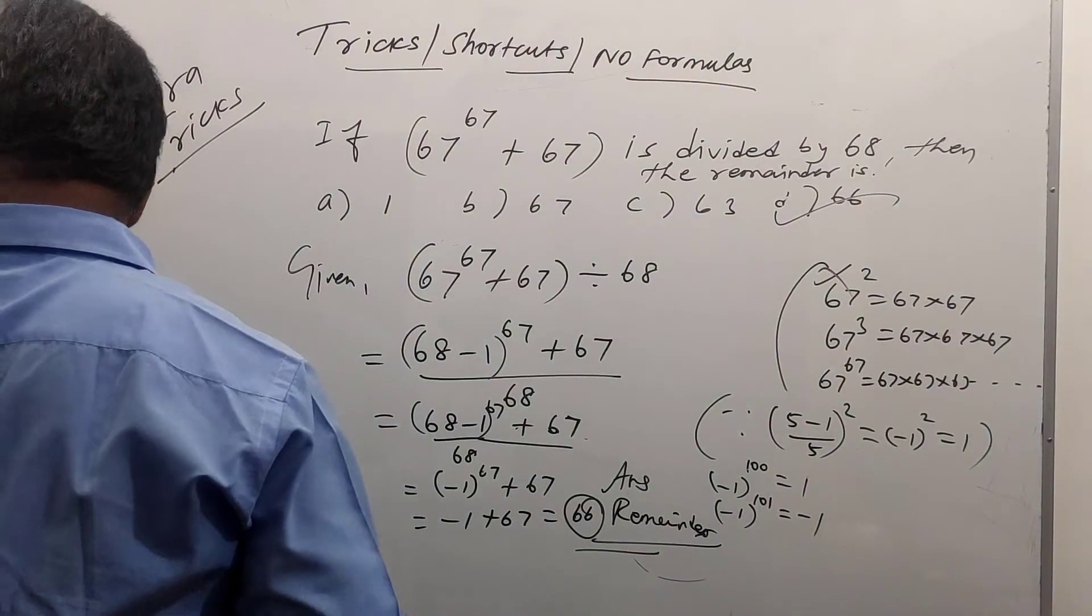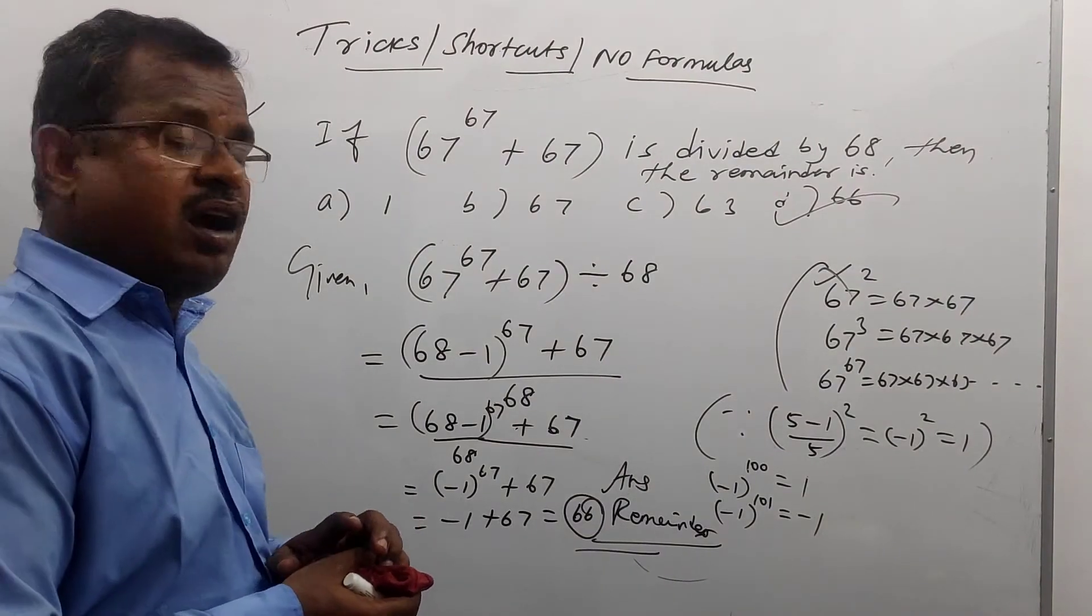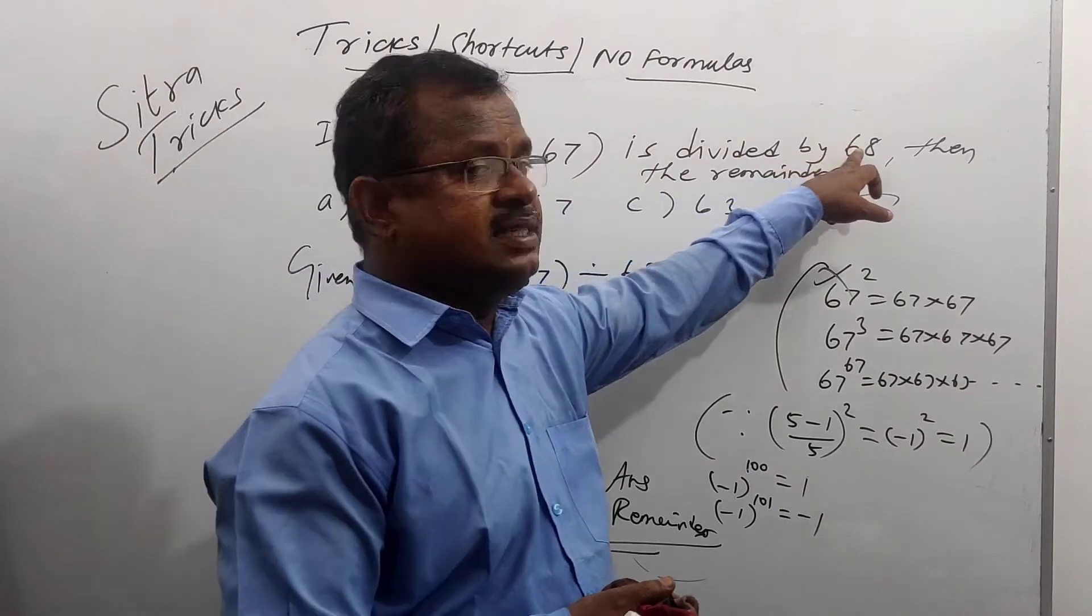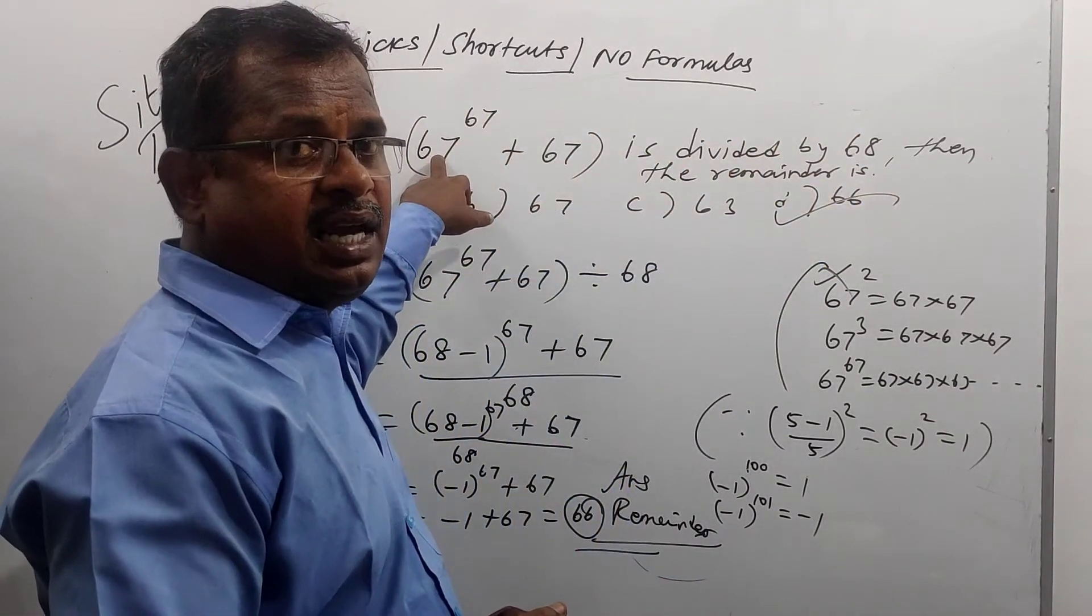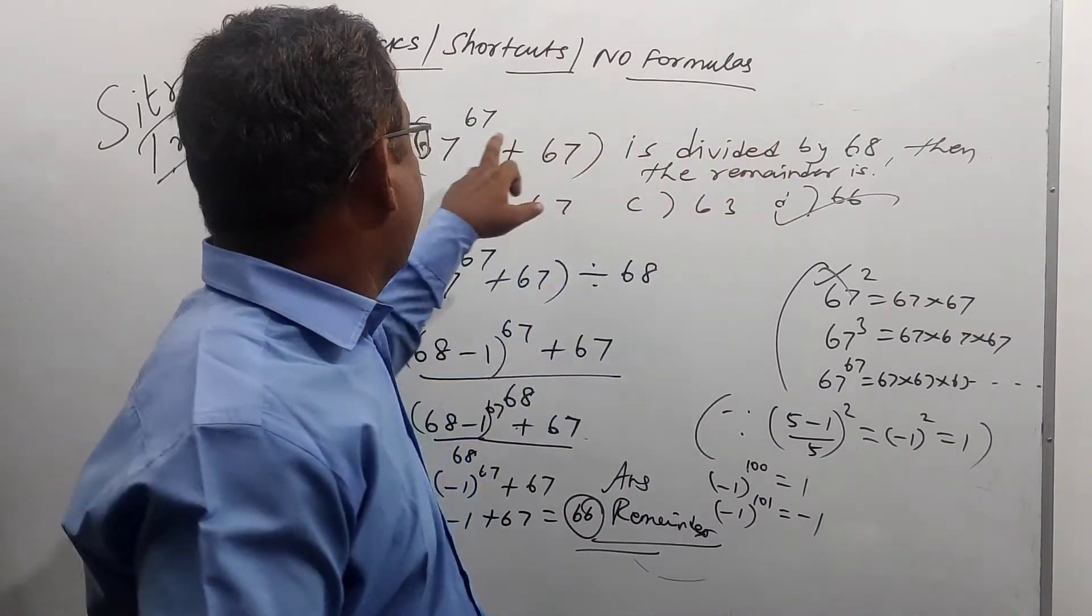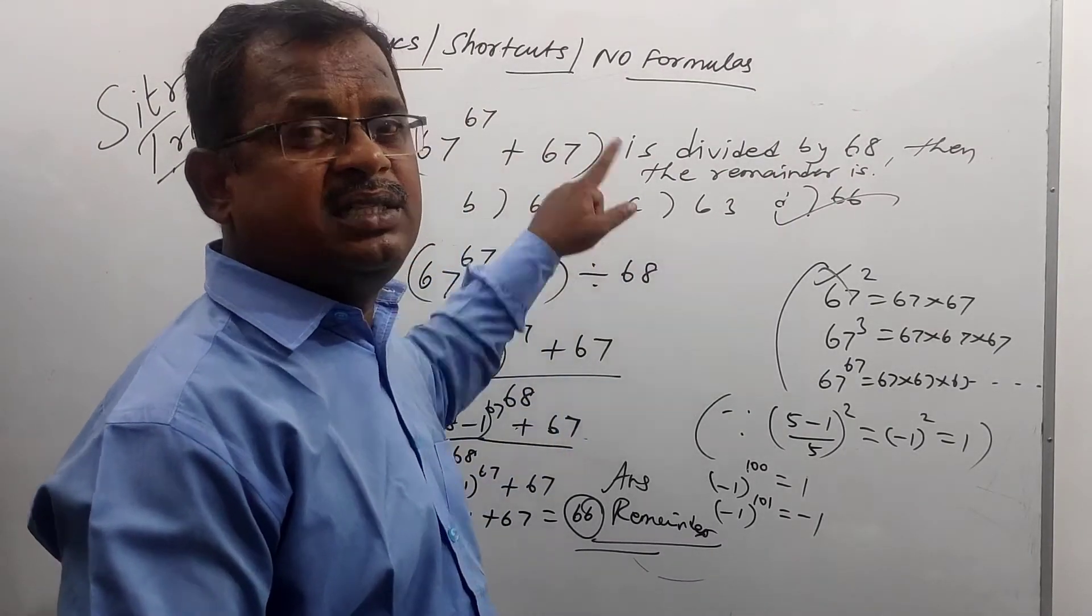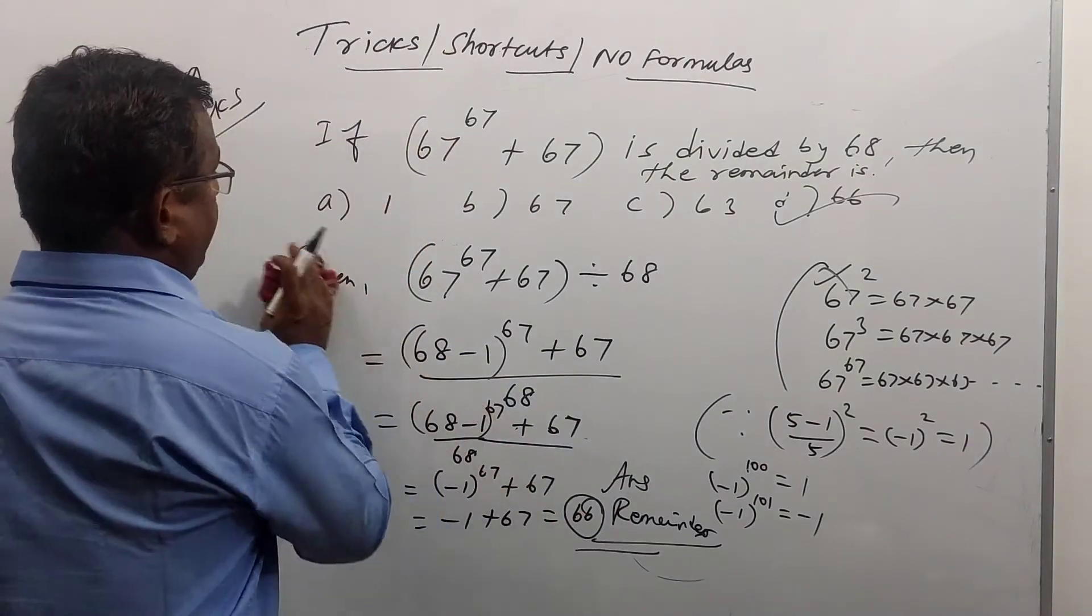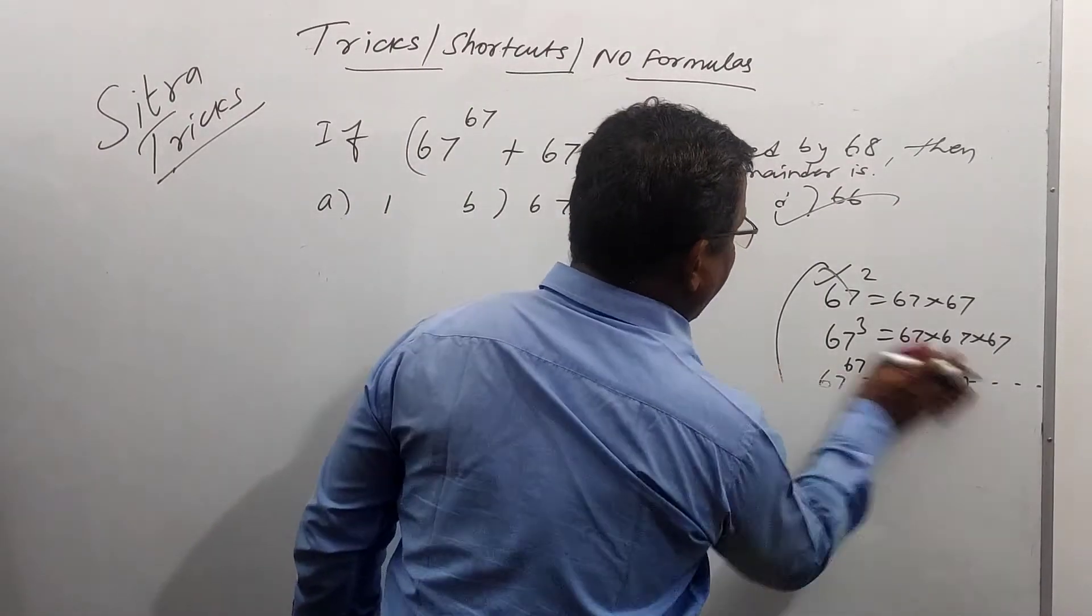Same type of sum we can write. If you know these sums, we can write automatically. 68, here 67, here 68, here 68. See difference. 68. So, how to write 68 minus 1. The remainder is minus 1. Minus whole power 67 minus 1. Minus 1 plus 67. That is 66. Are you clear? Same type of sum. We can write. The remainder is minus 1. We can find the answer within 1 second.